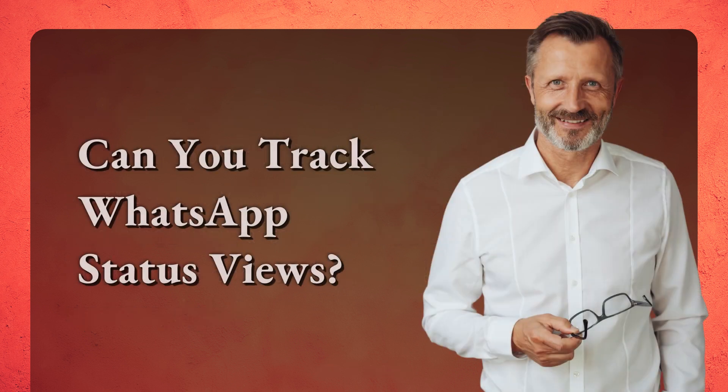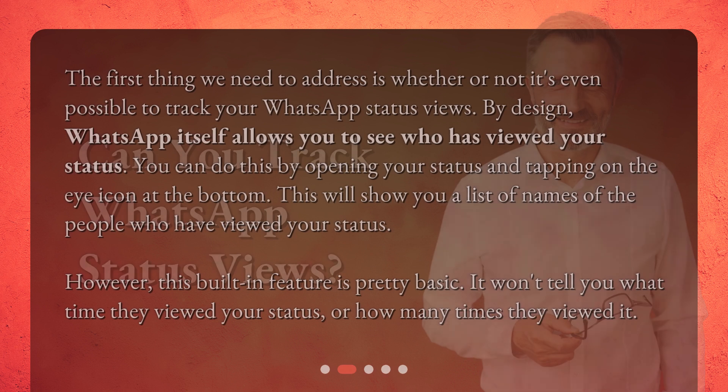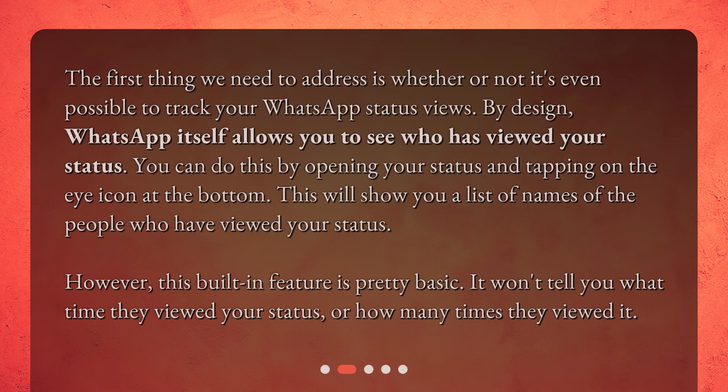Can you track WhatsApp status views? The first thing we need to address is whether or not it's even possible to track your WhatsApp status views. By design, WhatsApp itself allows you to see who has viewed your status. You can do this by opening your status and tapping on the eye icon at the bottom. This will show you a list of names of the people who have viewed your status. However, this built-in feature is pretty basic — it won't tell you what time they viewed your status, or how many times they viewed it.